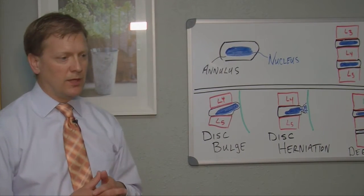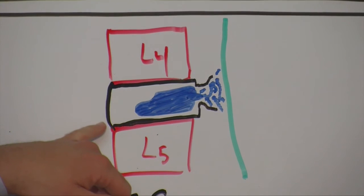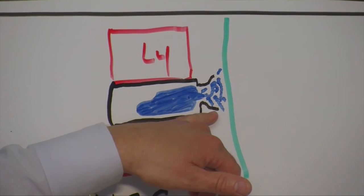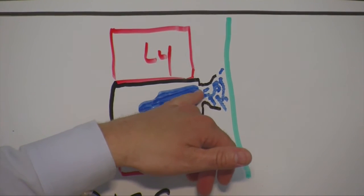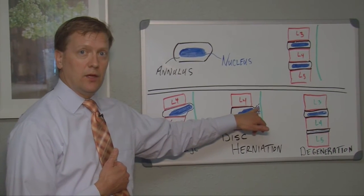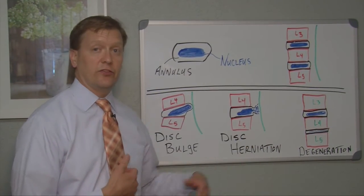The second thing is a disc herniation. Now the disc herniation is when the fluid actually gets outside of the annulus. So the annulus actually tears, and then the fluid seeps outside.